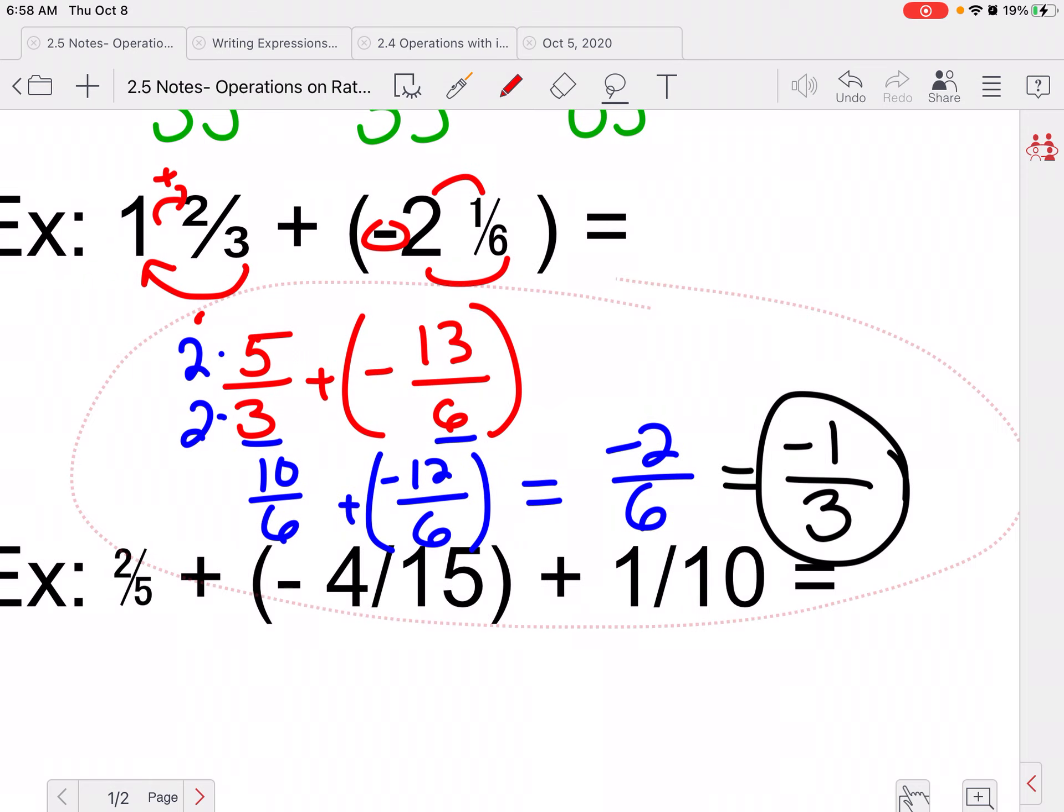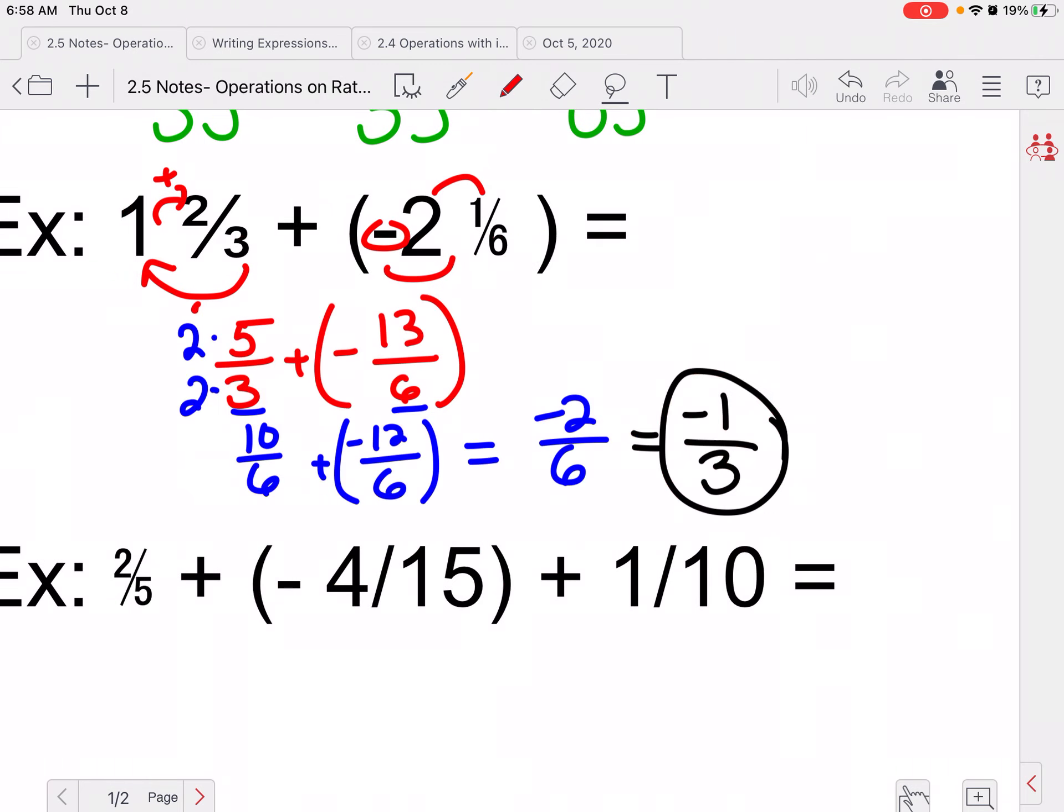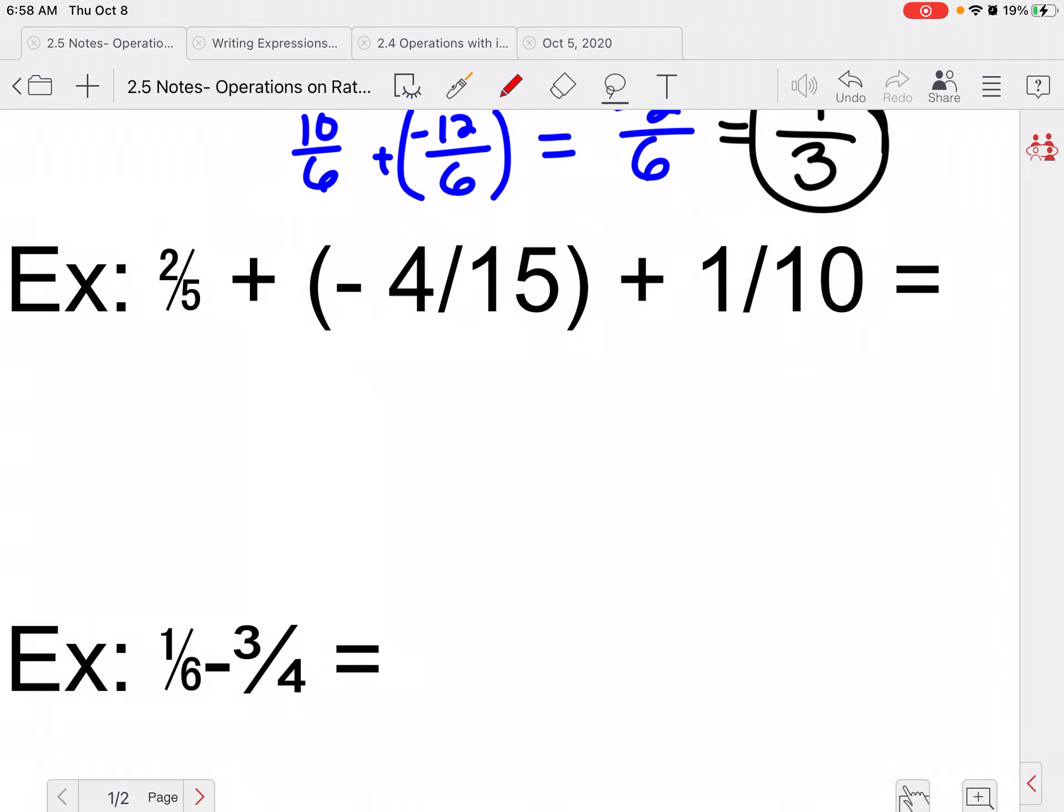So I'm going to go ahead and make this a little bit smaller so we can see our problem below here. Alright, so now we have 3 numbers. So let's try it. So I'm looking at 5, 15, and 10. And I know that they can all go into 30. Now, if you needed to, you could make it 150 if you want. But that's just going to be a lot of simplifying later. So let's use 30.